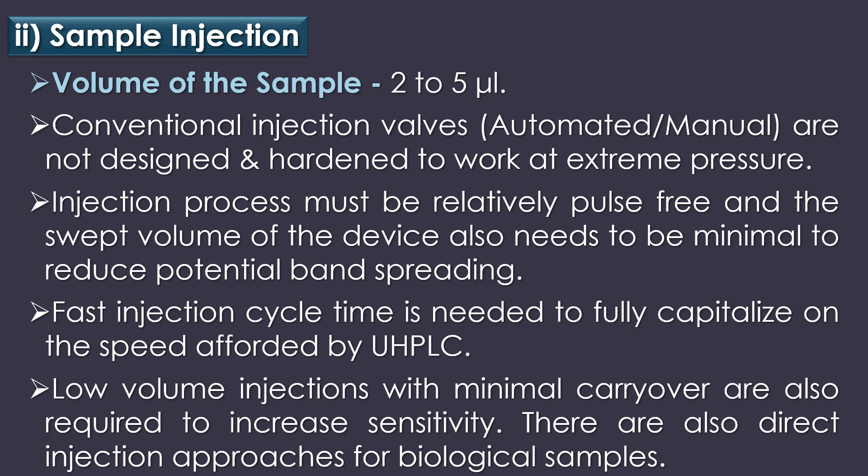In UHPLC, sample introduction is very critical. The volume of sample in UHPLC is usually 2 to 5 µL. Conventional injection valves, either automated or manual, are not designed and hardened to work at extreme pressure. To protect the column from extreme pressure fluctuations, the injection process must be relatively pulse-free and the swept volume of the device must be minimal to reduce potential band spreading. A fast injection cycle time is needed to fully capitalize on the speed afforded by UHPLC, which requires high sample capacity. Low volume injections with minimal carryover are also required to increase sensitivity. There are also direct injection approaches for biological samples.